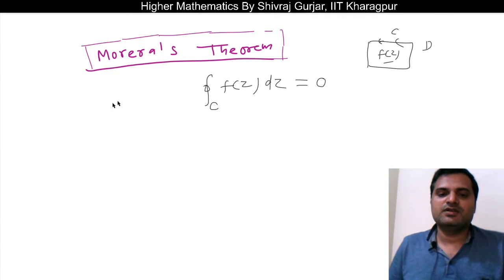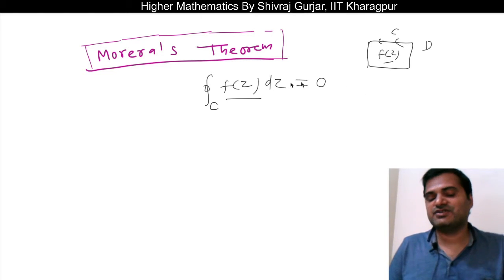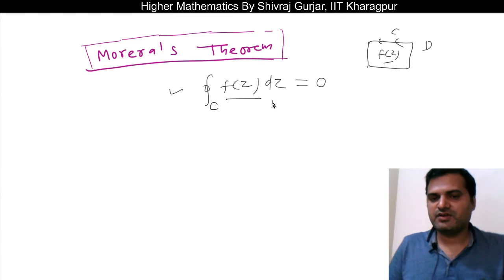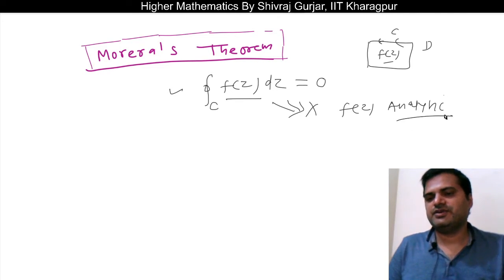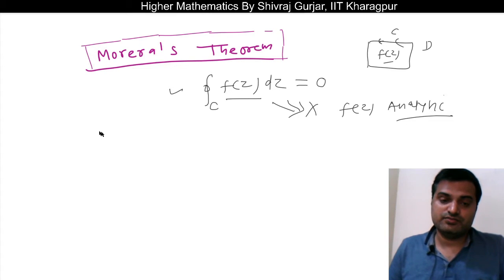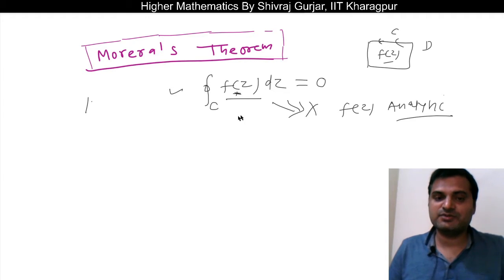But if the integral of f(z)dz equals zero, that was a necessary condition but not a sufficient condition — meaning just because the integral is zero, that doesn't mean f(z) is analytic. The condition will be sufficient only when f(z) is continuous there. That is nothing but Morera's theorem.